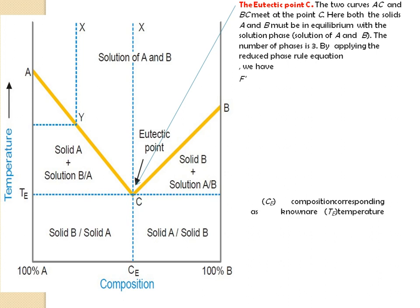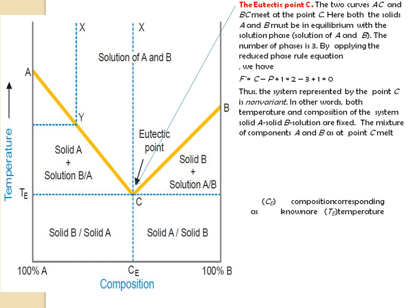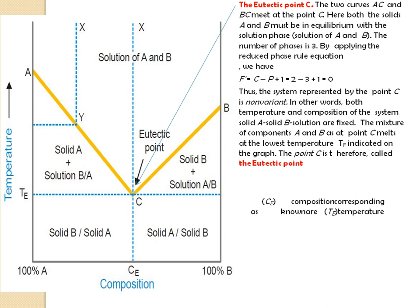At the eutectic point, applying the condensed phase rule F' = C − P + 1, we have three phases present. Therefore, the degrees of freedom becomes zero, and the system represented by point C is non-variant — no single variable is required to define the system completely. Both temperature and composition of the system — solid A, solid B, and solution — are fixed. The mixture of components A and B at point C melts at the lowest temperature, Te, as indicated on the graph.